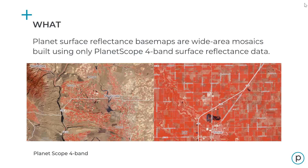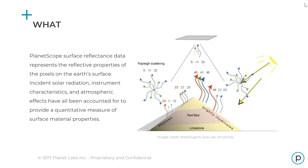Planet's surface reflectance basemaps are wide-area mosaics built using only PlanetScope 4-band surface reflectance data. PlanetScope surface reflectance data represents the reflective properties of the pixels on the Earth's surface. Incident solar radiation, instrument characteristics, and atmospheric effects have all been accounted for to provide a quantitative measure of surface material properties.